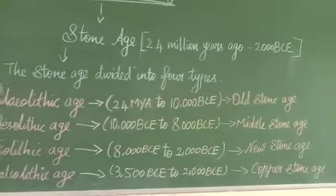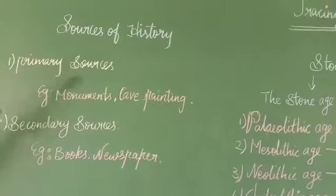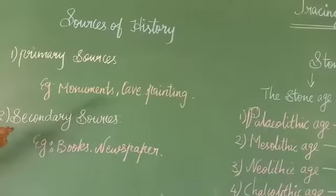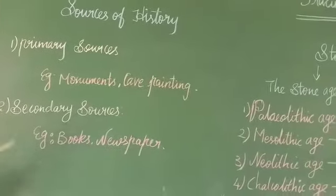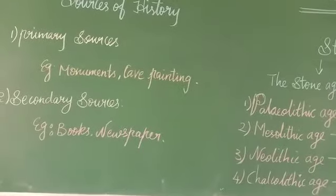Next, the sources of history. There are two sources of history. One is primary source—examples include monuments and cave paintings. The second one is secondary sources—examples include books and newspapers. Thank you for watching this video, children.